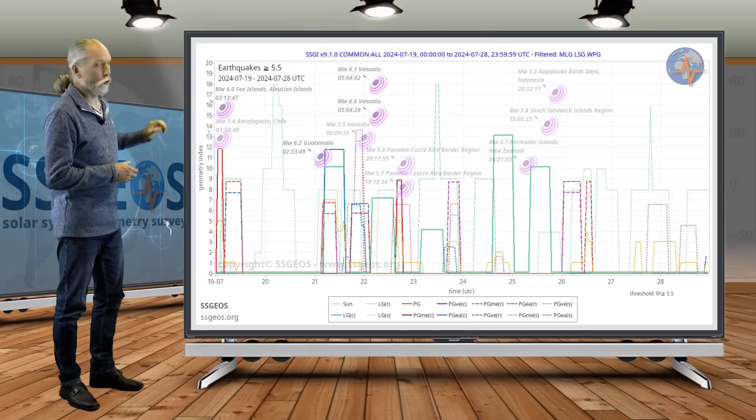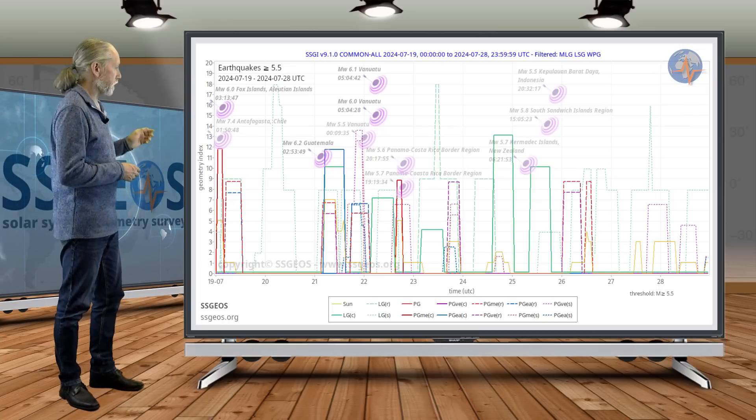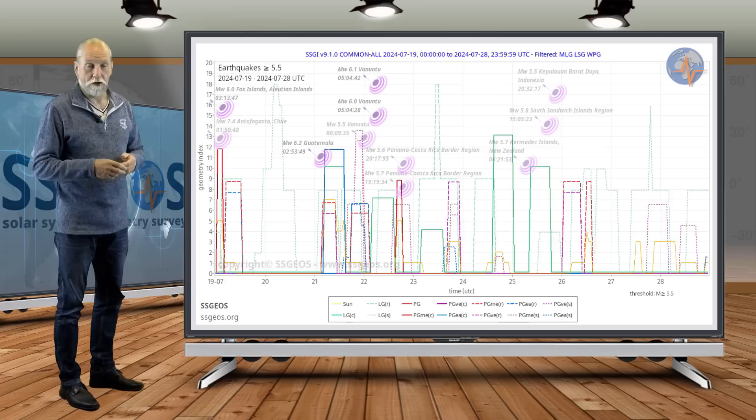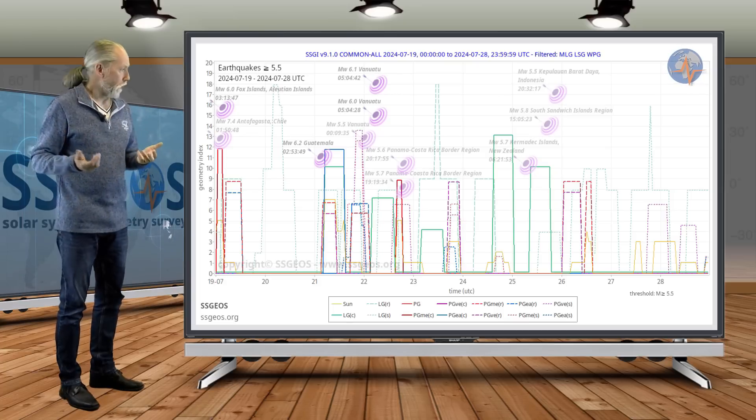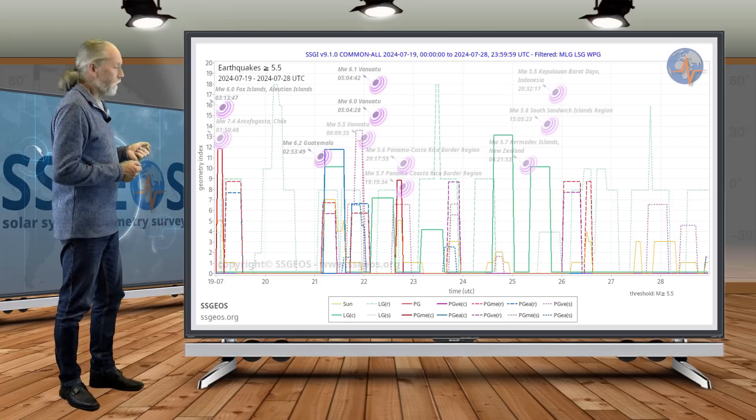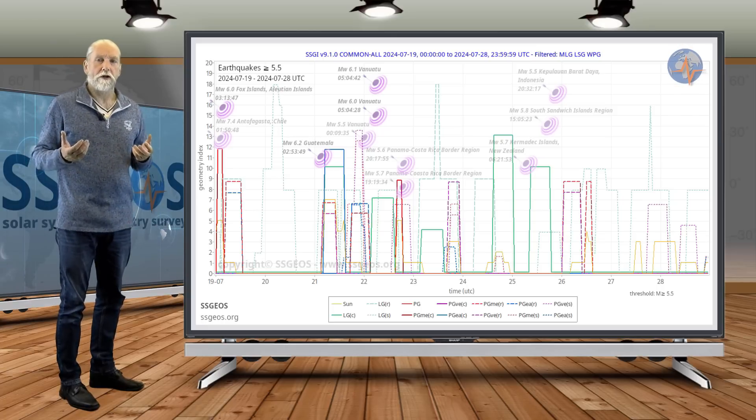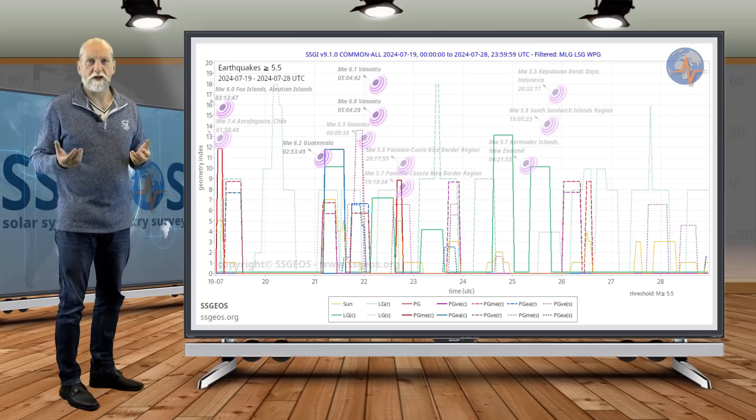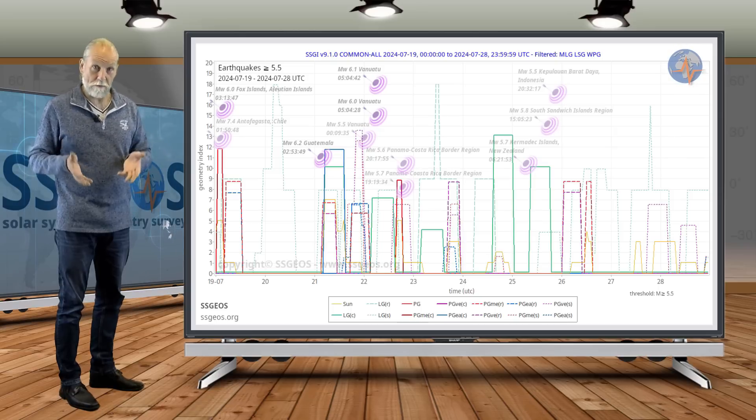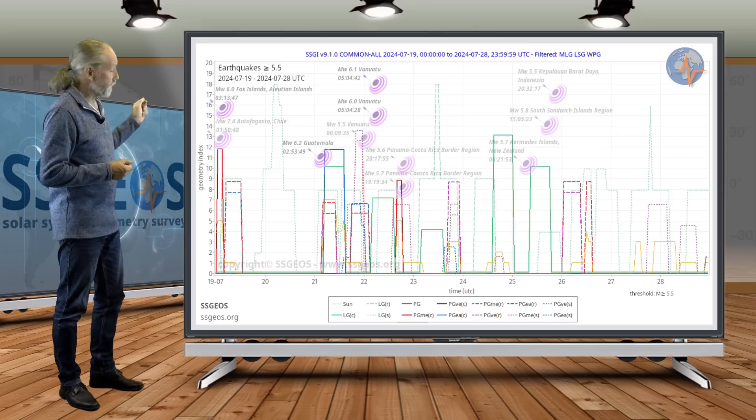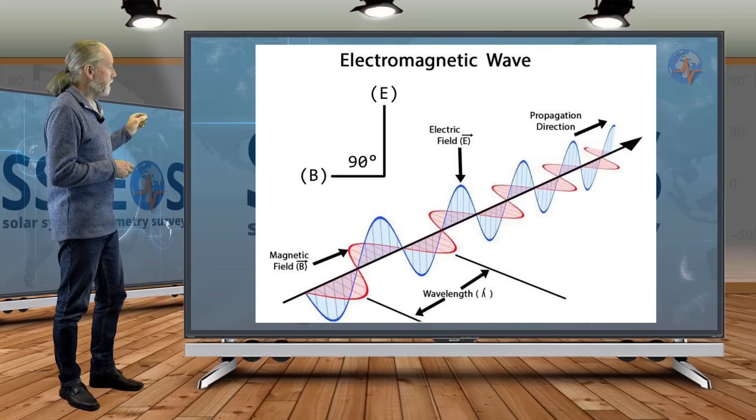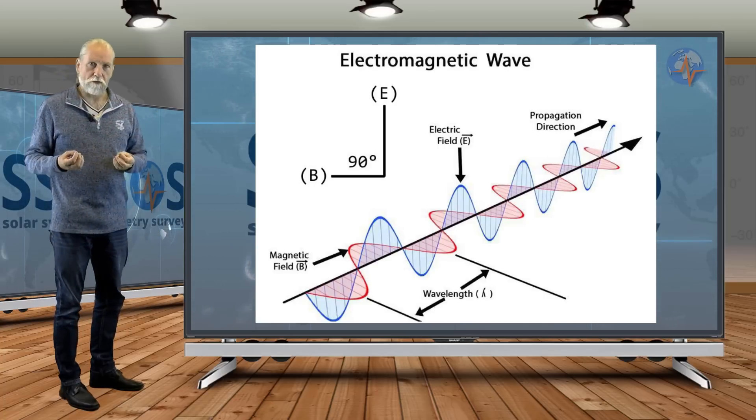Other than that, we didn't have stronger earthquakes in the previous time frame - not on the 26th, 27th, or 28th, nothing 5.5 and larger. Before I go to the next time frame, people have asked me about the planetary and lunar geometry, the specific angles that we emphasize in the SSGI models. This is based on the properties of the electromagnetic wave.